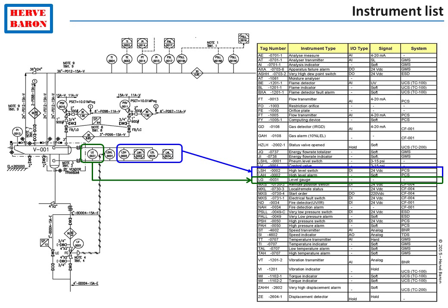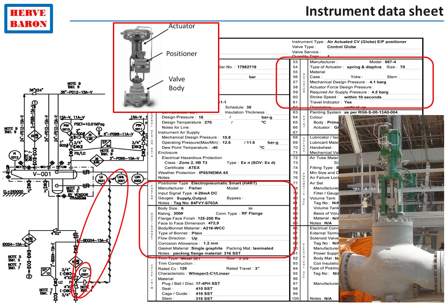For the other instruments, the process information is available on the heat and mass balance. The process data sheet of a control valve, for instance, shows the functional requirements — the operating range and extreme operating cases — as well as the maximum differential pressure for sizing the actuator and the fail-safe position. The instrumentation discipline complements this process information with mechanical, electrical and instrumentation information, and produces the instrument data sheet.